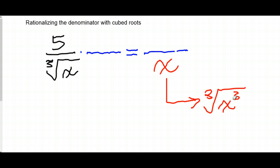Well, if I multiply, let's try cubed root of x squared. Let's think about it. When I do that, cubed root of x times cubed root of x squared is going to give me cubed root of x cubed, and cubed root of x cubed is x.